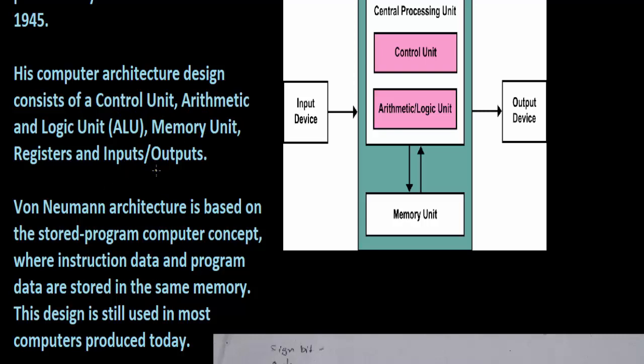Von Neumann architecture is based on the stored program computer concept, where instructions and data program are stored in the same memory, not in different memory. This design is still used in most computers.